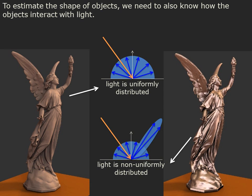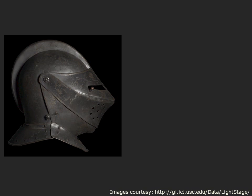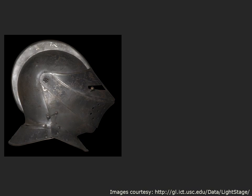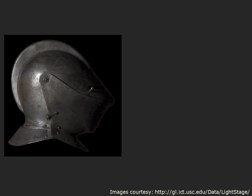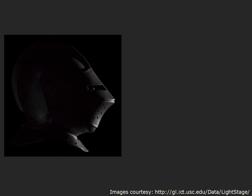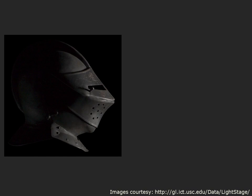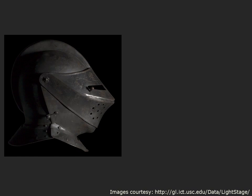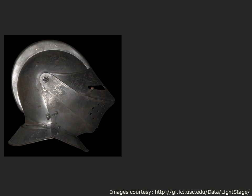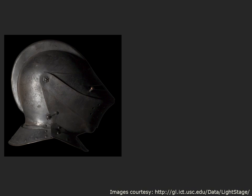If you notice the difference, then we can account for the differences in appearance in a meaningful way. To recover both the shape and the nature of interaction with light, we take multiple images of an object by varying its lighting. This procedure is called photometric stereo.